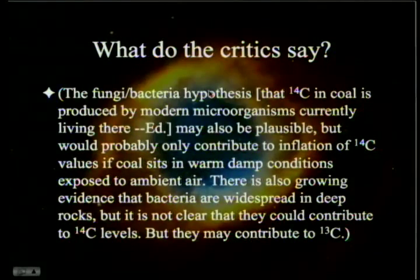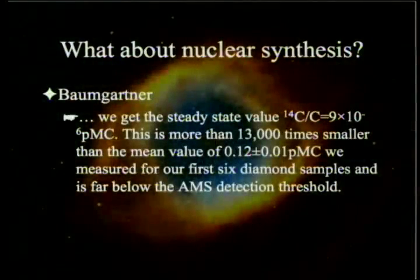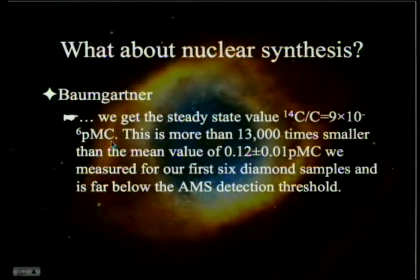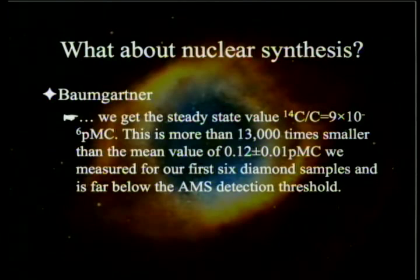So the only answers left are: either it's real — in which case these are young — or it's made by neutrons underground. Baumgartner, after calculations based on literature, says the steady-state value of carbon-14 to ordinary carbon would be 9 times 10 to the minus 6 percent modern carbon. This is more than 13,000 times smaller than the mean value of 0.12% modern carbon measured for their first six diamond samples, and far below the AMS detection threshold — and extremely far below the coal and dinosaur bone data.